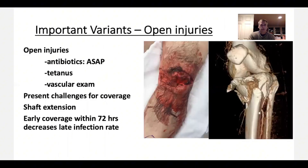Regarding open injuries, they can be challenges for coverage, obviously with plastic surgery often needed for degloving injuries, particularly proximally. They often have shaft extension, and early coverage if possible within 72 hours — just like any open fracture — can decrease the late infection rate.